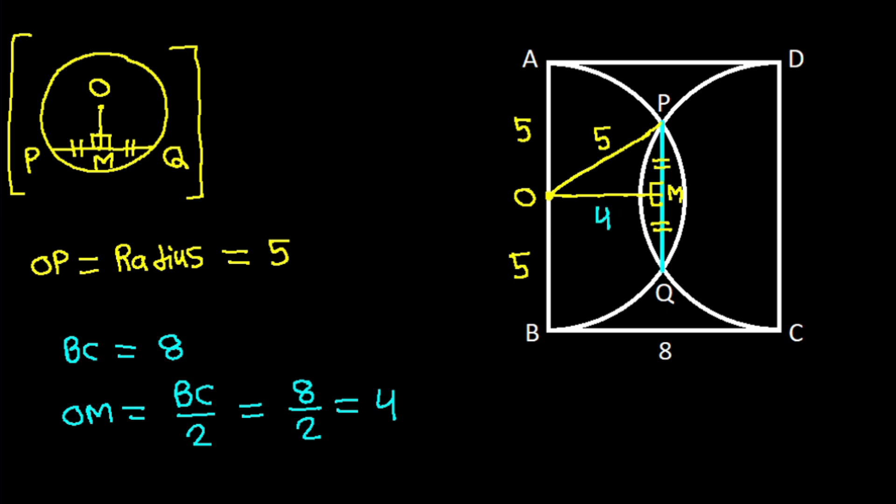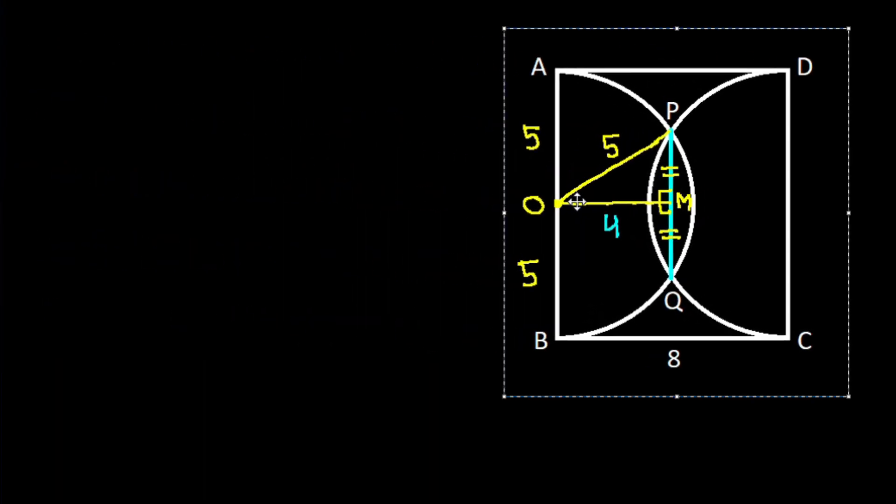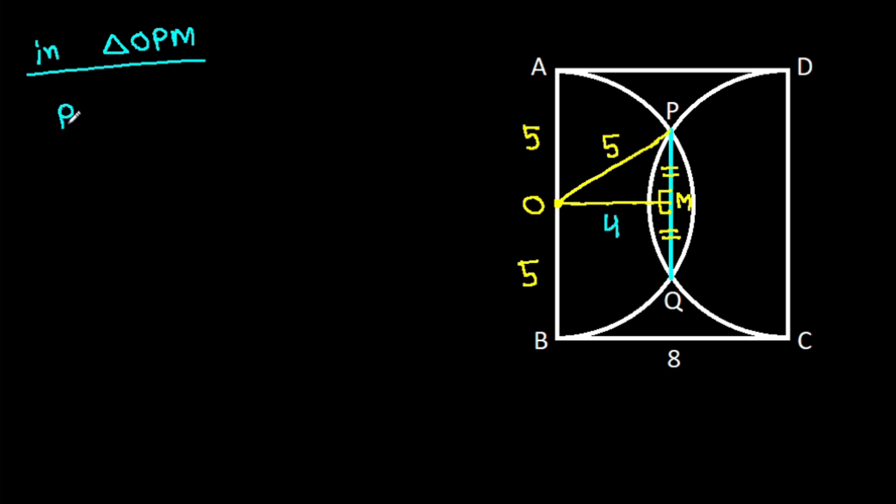And in triangle OPM, PM square will be OP square minus OM square by Pythagorean theorem.